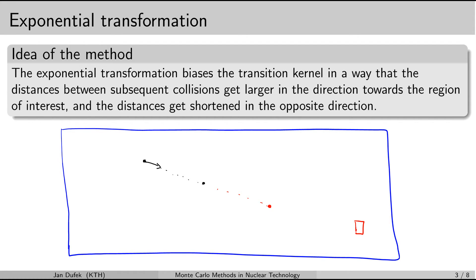On the contrary, when the neutron is moving away from the detector, the distances on average become smaller when the Exponential Transform method is applied. So instead of sampling the next collision at the full distance, it would be sampled at roughly the midpoint of that distance.